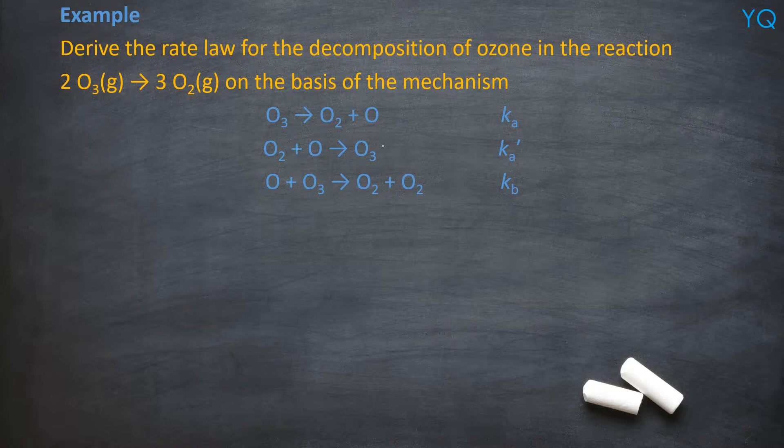So in this case, you're supposed to derive the rate law for the decomposition of ozone in this reaction. Two ozone molecules gives you three oxygen molecules on the basis of this mechanism. So the first step, you need to find the intermediate. So over here, you can see that very clearly, the intermediate has to not be the reactants or the products. So over here, there's only one. It's an ozone atom here, here, and here.